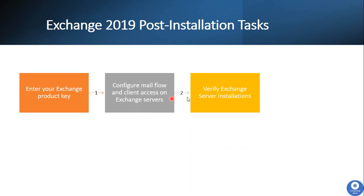Next, you need to verify the Exchange Server installation. There are multiple ways to verify whether Exchange 2019 is correctly installed. You can run the Get-ExchangeServer command in the Exchange Management Shell and check the build number output to confirm the correct cumulative update and version are installed. You can also verify that all Microsoft Exchange services are in a running state and all required components are in an active state, and review the Exchange setup log. Additionally, you can send and receive test emails to internal and external users to confirm Exchange is working correctly.